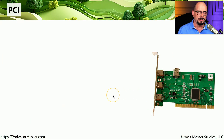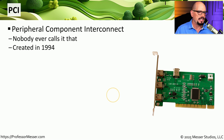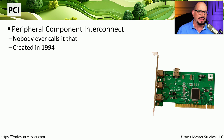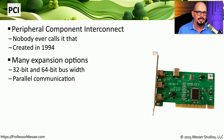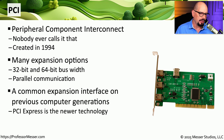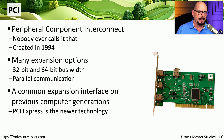On older motherboards, you may find that one of the buses available is a PCI bus, which stands for Peripheral Component Interconnect. This is one that was created in 1994 and has two different sizes — a 32-bit bus and a 64-bit PCI bus. This older style bus sends data over a parallel communication. You may find that your newer motherboard no longer has a PCI bus and instead uses PCI Express, which has a serial form of communication.